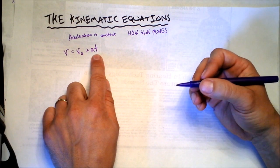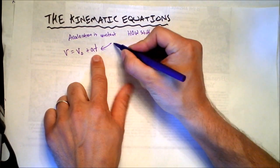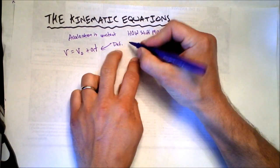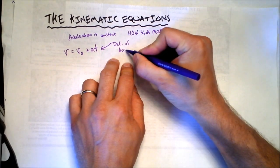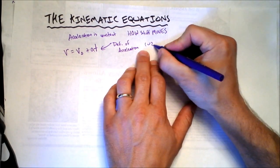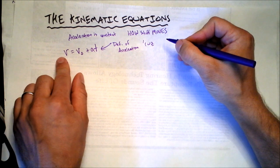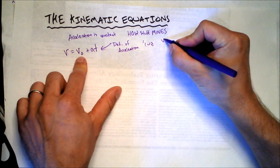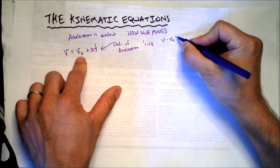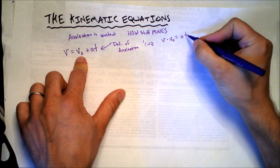If we rearrange this a little bit, we'll see why it's the definition of acceleration. If we subtract v naught from both sides, we get v minus v naught equals acceleration times time. Now I'm going to divide delta t into both sides and we'll have v minus v naught divided by time equals acceleration.